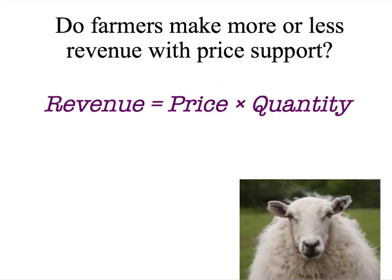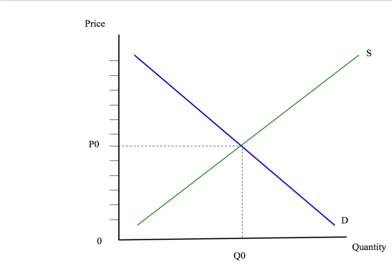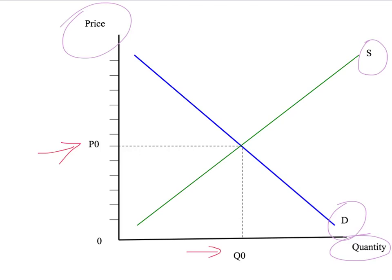We're going to be asking the question: do farmers make more or less revenue with price support? The formal definition of revenue is simply the price that farmers receive times the quantity of wool that the farmers sell. We will start with our initial supply and demand curve diagram for wool. On the vertical axis we have the price of wool, on the horizontal axis we have the quantity of wool. We start with our initial equilibrium price P0 and Q0, where the quantity buyers want to buy equals the quantity farmers wish to supply.